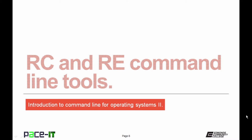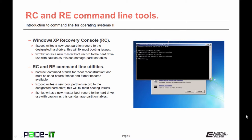Now let's discuss the most common recovery console and recovery environment commands used to recover a PC that will not boot to the graphical user interface. The most common commands you're going to use to help recover a system that won't boot for Windows XP are fixboot and fixMBR. Fixboot writes a new boot partition record to the designated hard drive, and this will fix most booting issues. If fixboot doesn't work, you can always try fixMBR, which writes a new master boot record to the hard drive.